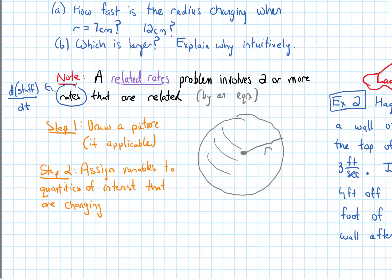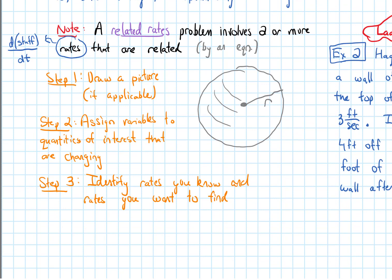We are ready for step three. Step three is to identify the rates you know and the rates you want to find. In our problem, let's write down the ones that we know, and then we'll write down the ones that we want to find.